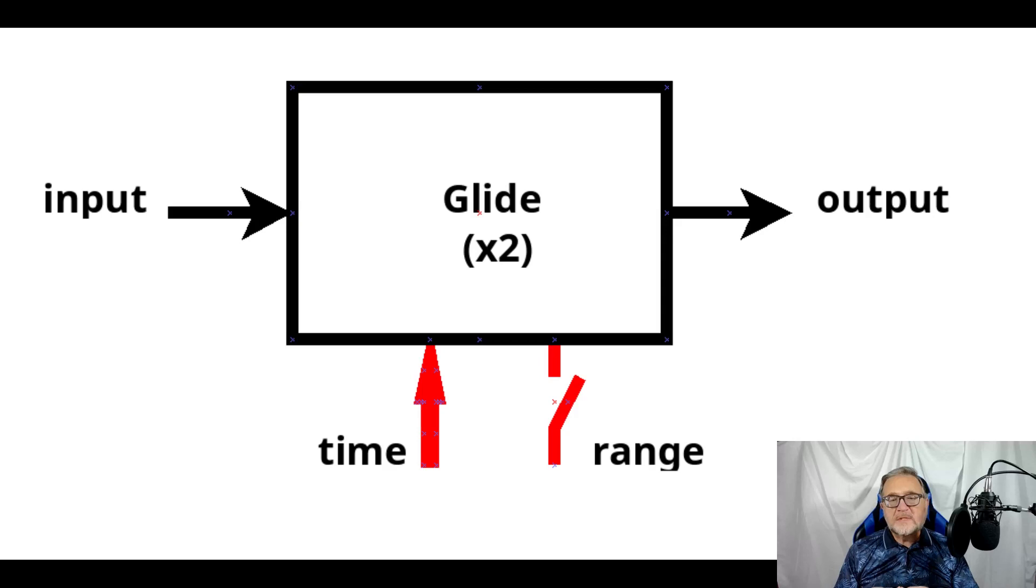The glide device accepts a control voltage as an input, and provides in output the processed control voltage.